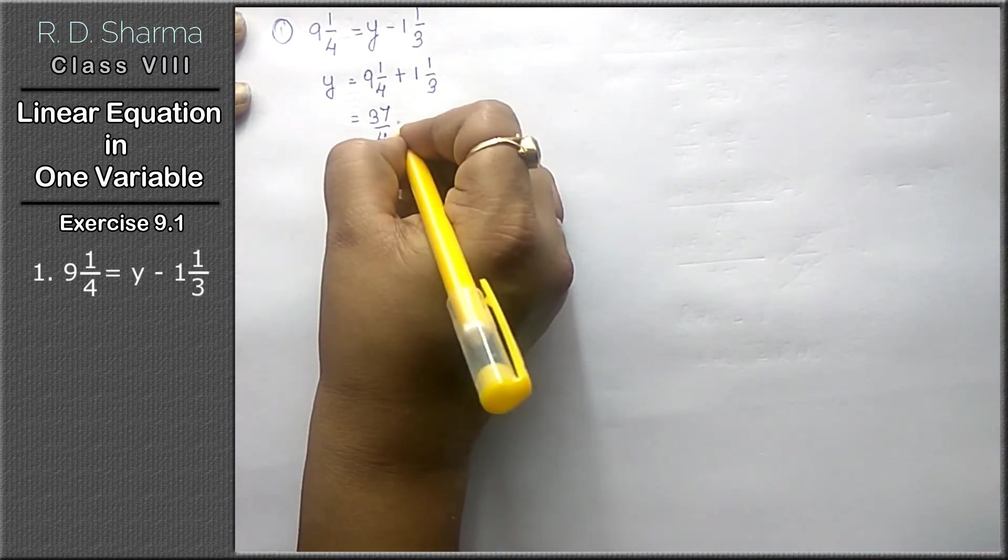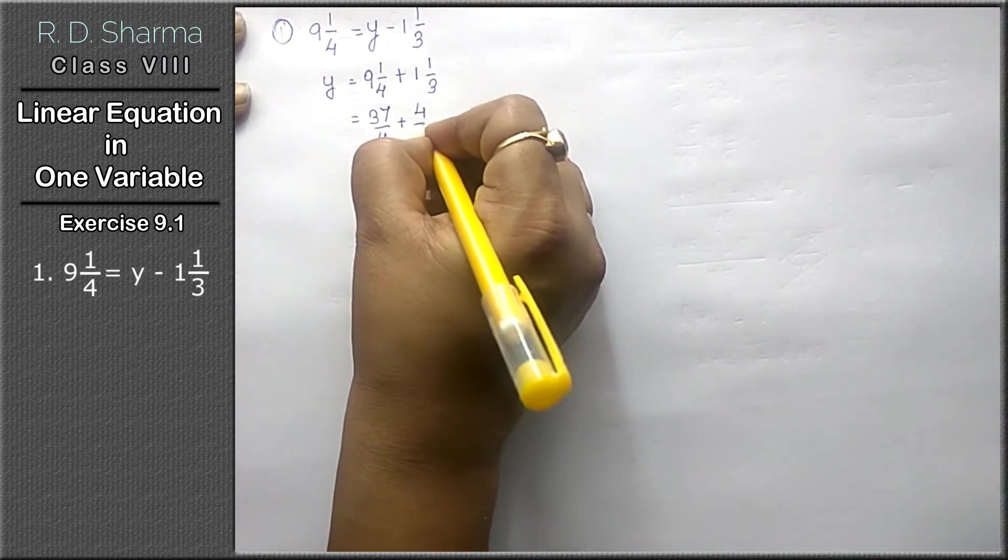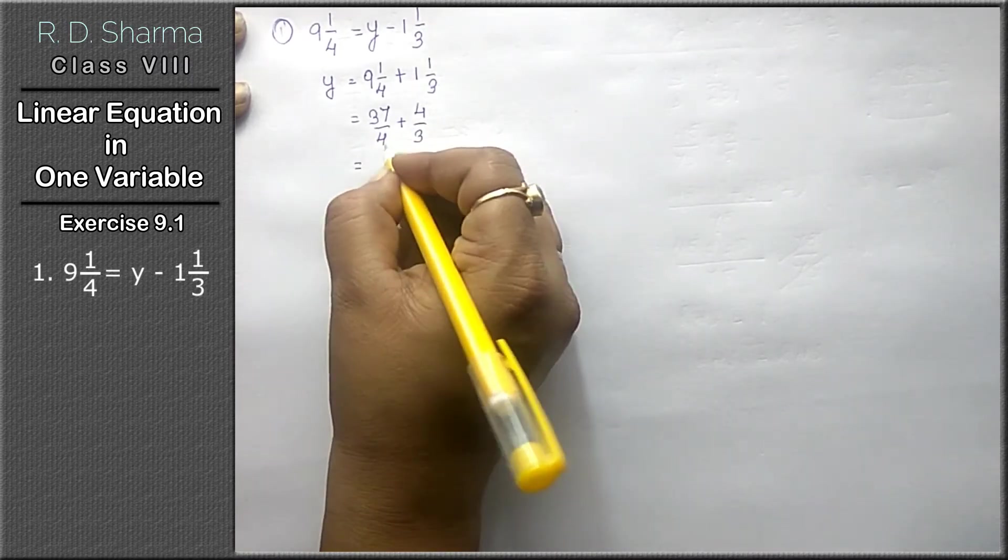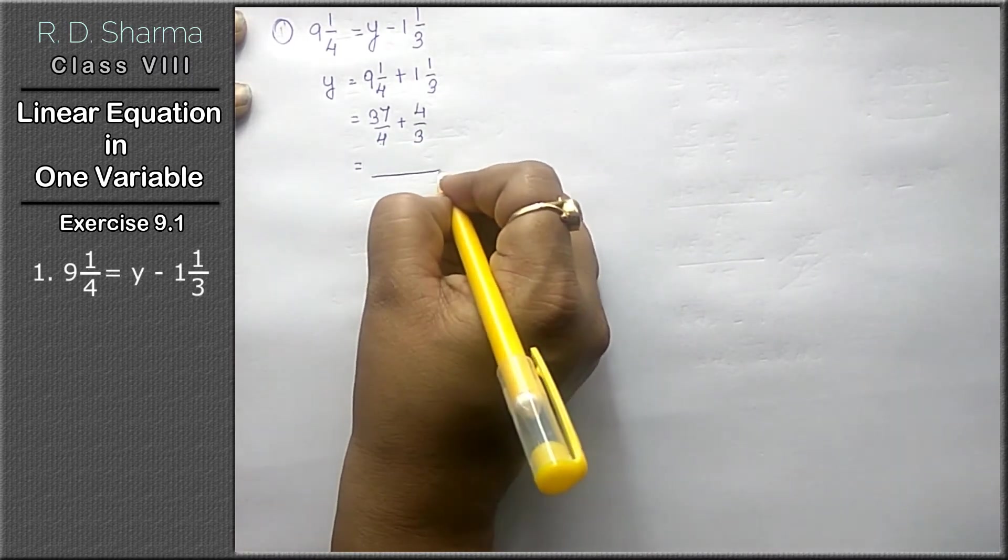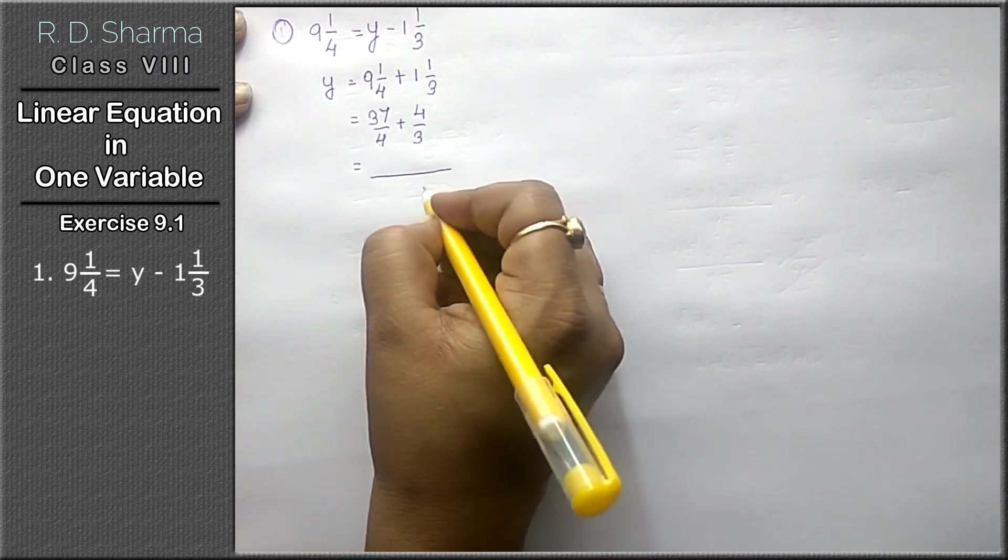Now, 4 times 9 is 36, plus 1 is 37 upon 4. Plus 3 times 1 is 3, plus 1 is 4 upon 3. Here our denominators are different, so we will take LCM. LCM of 4 and 3 is 12.